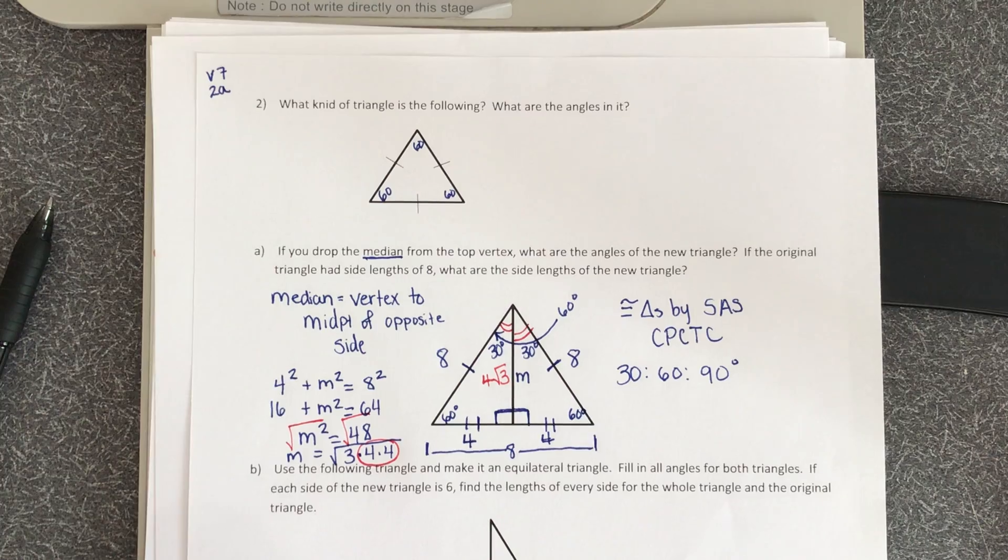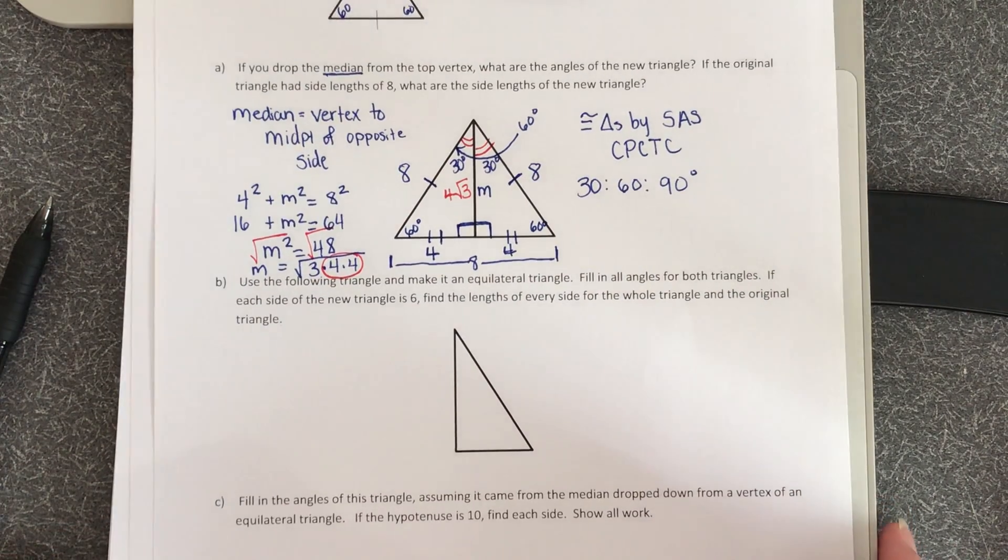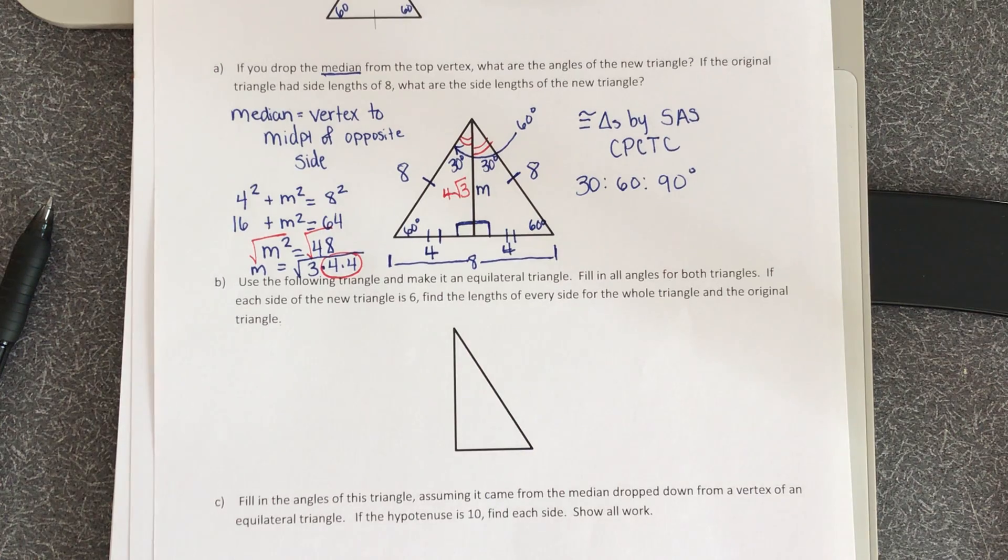Okay, so let's try it again. Let's take a look at B. So in this question, it says use the following triangle and make it into an equilateral triangle. Fill in the angles for both triangles. If each side of the new triangle is 6, find the lengths of every side for the whole triangle in the original.